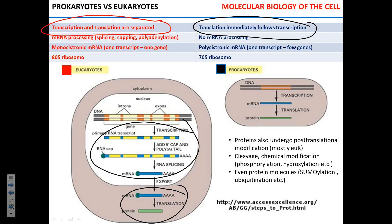Another big difference: in prokaryotic organisms, mRNA does not have to be processed. Once the gene is transcribed, mRNA is ready for translation. That allows that immediacy — it permits ribosomes to start translation immediately after the mRNA transcript comes out of the RNA polymerase.